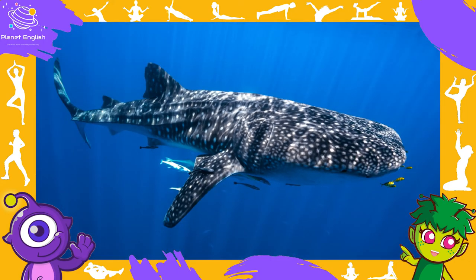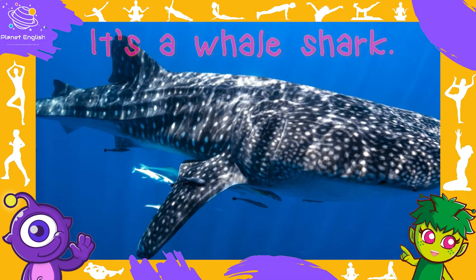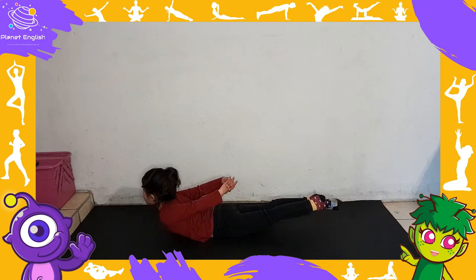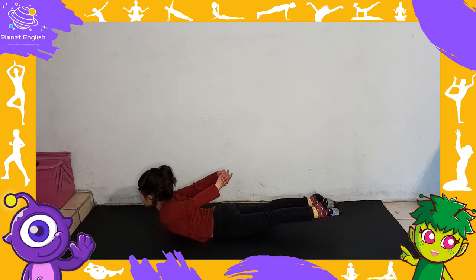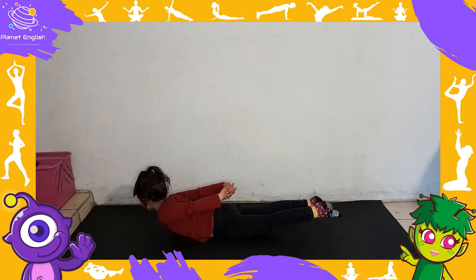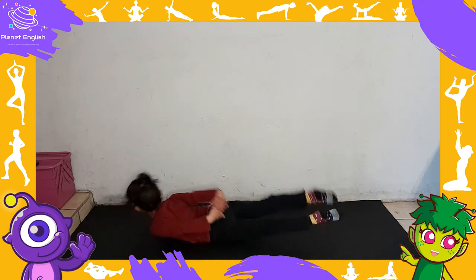And finally, what animal is this? It's a whale shark. A whale shark is a fish. How does a whale shark move? A whale shark can swim.